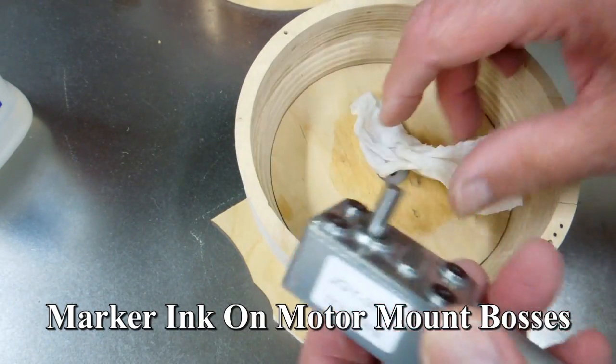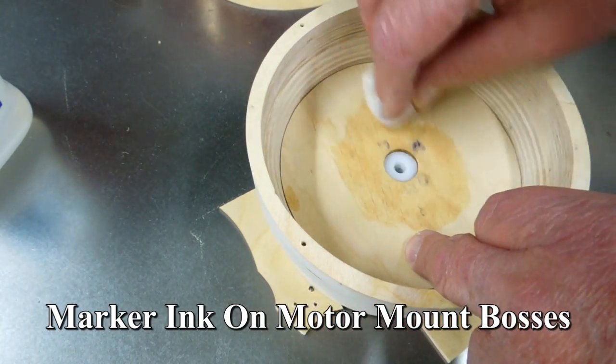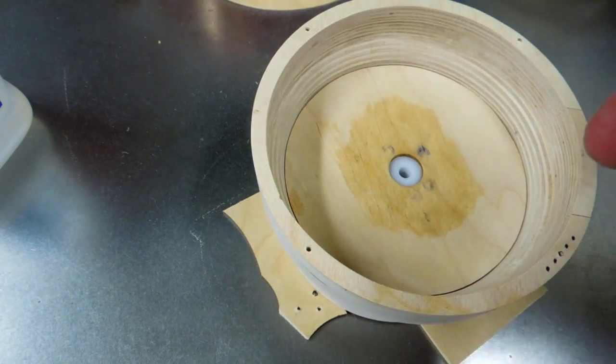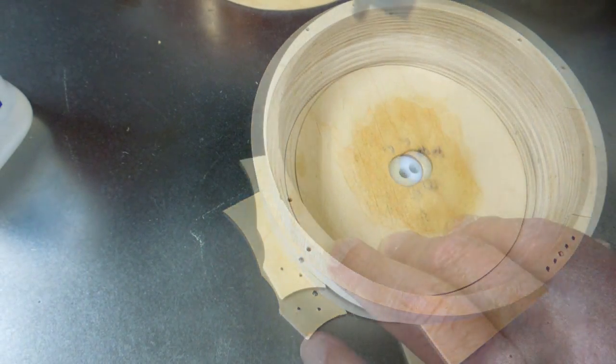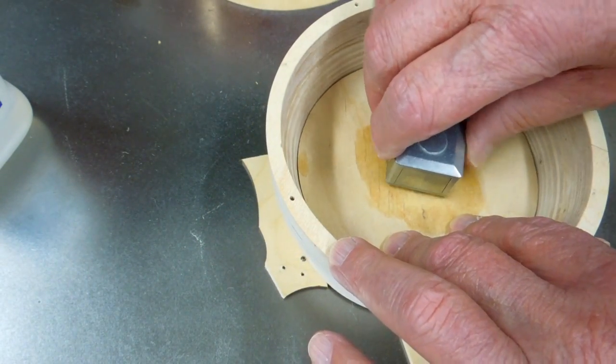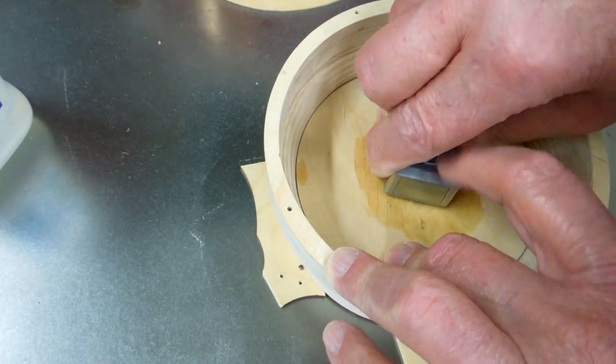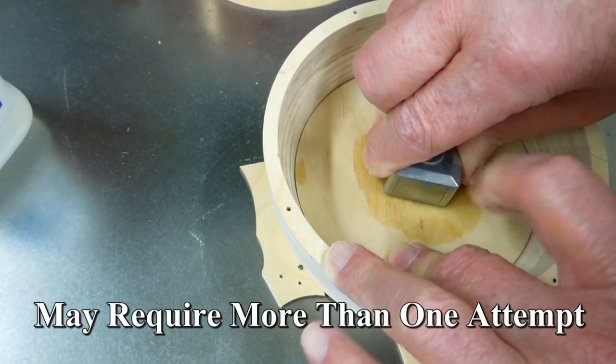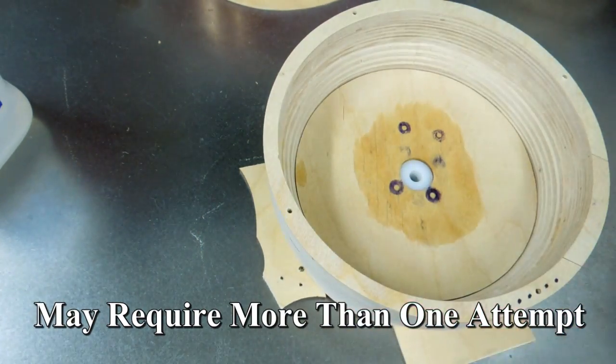I want to mark these locations for the motor on this piece of plywood. Put some alcohol on the plywood and push that down. There! Four locations.